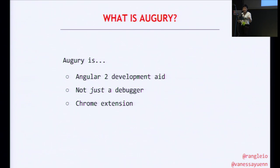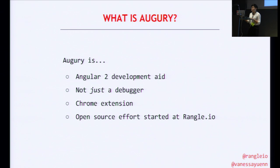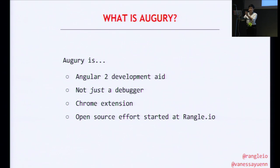The tool is available as a Chrome extension. You could go download it from the Chrome store later or now, if you don't want to listen to me, that's fine. It is an open source effort started at Wrangle. It began with a message from the Google core team last year to Nick, our CEO, asking if we would like to be part of this effort to make tools for the Angular 2 ecosystem. And of course he said yes, and now here we are.